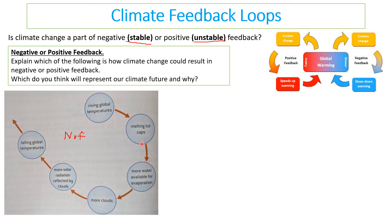Here is the negative feedback climate example: rising global temperatures cause ice caps to melt; with more water available, there is more evaporation; that creates more clouds; clouds reflect more solar radiation so less heat enters the planet; this could then cause a decrease in global temperatures. The initial increase has led to a final decrease — negative feedback causing stable equilibrium.